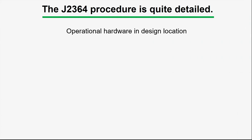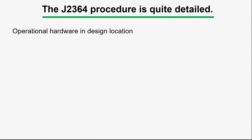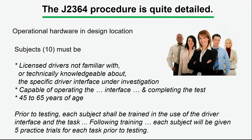The details of the procedure are rather extensive, which is typical of standards. For example, it talks about the requirement that the hardware be in the design location. There are ten subjects, with requirements for their familiarity with the interface, their age, training, how many practice trials, and so forth. This is common for a good standard — that it has all the details, if there's a process involved, to describe how testing is carried out, because you want the procedure to be replicable. This standard is somewhat unusual in that it also has a performance criterion — many methods documents just describe how to perform a test, but not what passes or fails.